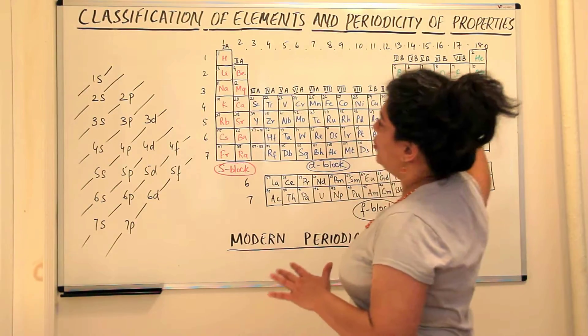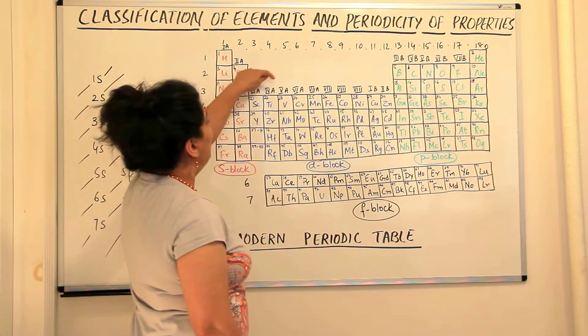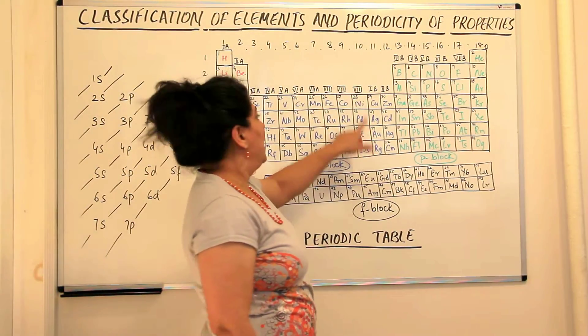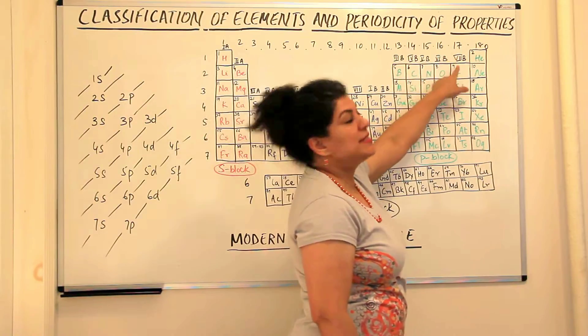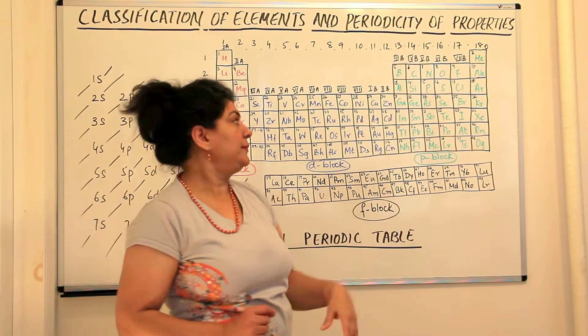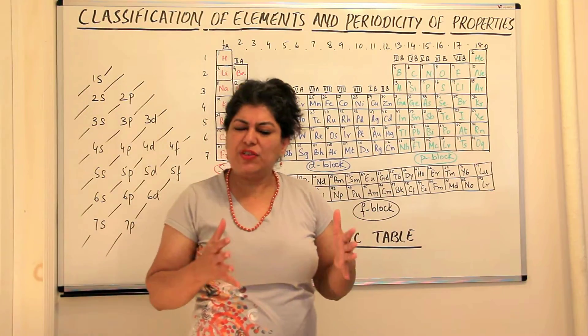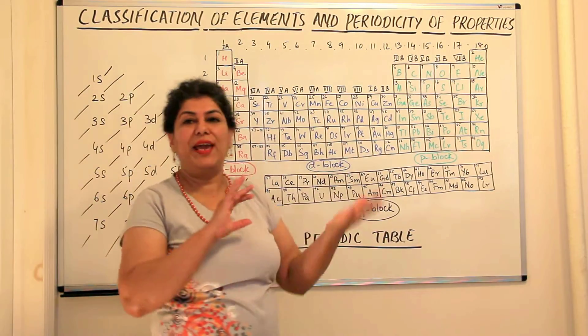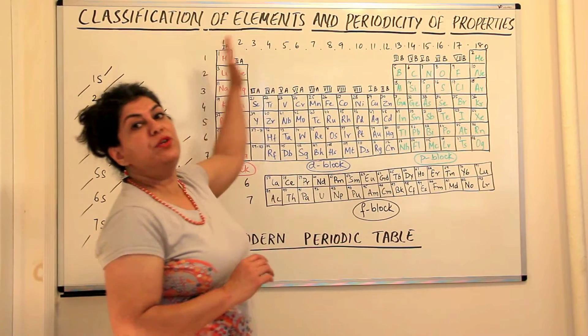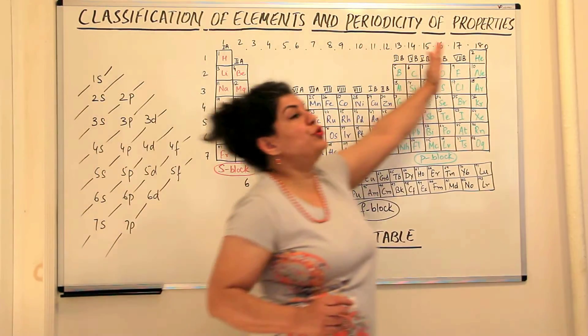There were 18 groups and initially when he named these groups he called them 1A, 2A, 3A, 4A, 5A, 6A, 7A and then there were 3 groups that were called 8 and then we had 1B, 2B, 3B, 4B, 5B, 6B, 7B and then the last group was called the 0 group because this group was actually added later. Now in the modern classification it was felt that this division of A and B is unnecessary. If we just number them from 1 to 18 it is easier. So in the modern periodic table we accept these as group 1 to group 18.